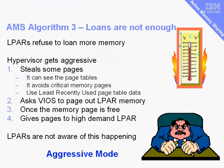When loans are not enough, we have a problem — cooperation doesn't work, so the hypervisor gets more aggressive. It will steal pages from the operating systems. Because it owns the page tables in the machine, it can see the page tables, avoid critical memory pages highlighted there, and use the least recently used algorithm to find the oldest memory pages in the machine. It will then use the VIO server to page out the memory from the logical partition. Once that has happened, the page is free and can be given to the logical partition with high demand for memory. The logical partitions are not aware of this happening — this is what we call the more aggressive mode.